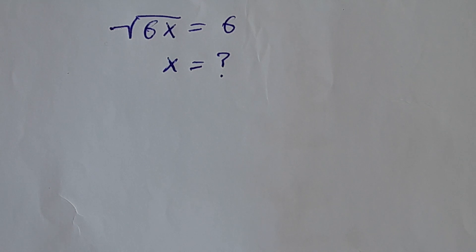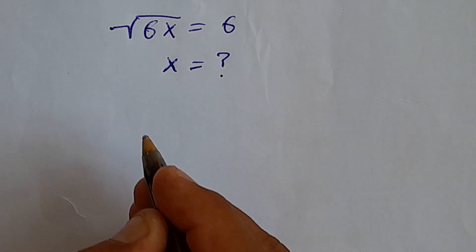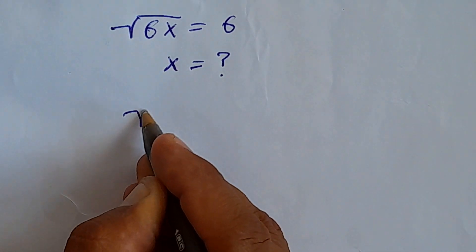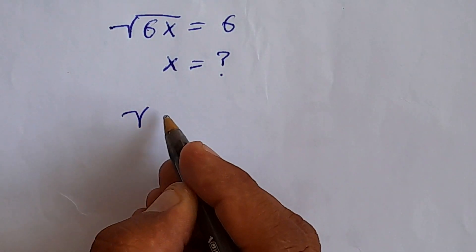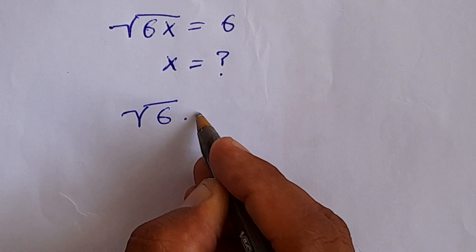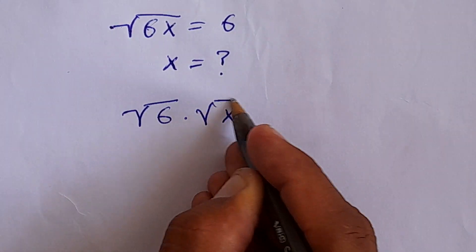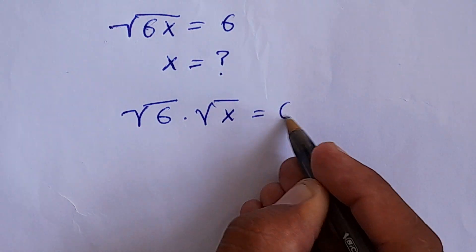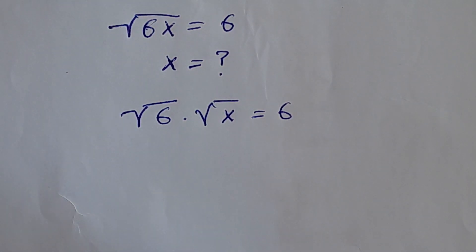For this purpose, instead of square root of 6x, I can write the square root of 6 times square root of x equals 6.